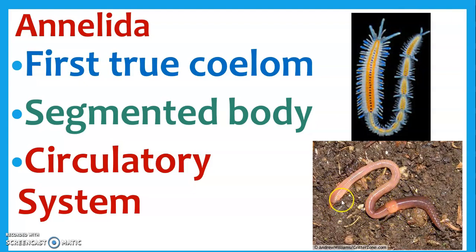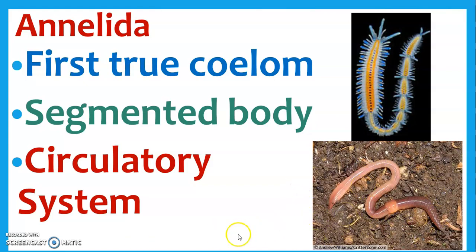Annelids have a segmented body, so everything is a lot more organized — they are very advanced worms compared to the others. And they have a circulatory system. Look at all the different systems and body plans we've been adding up, just with worms. Worms got us moving pretty far down the evolutionary tree.